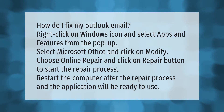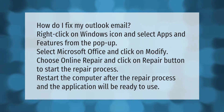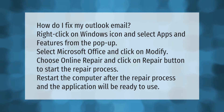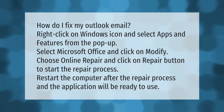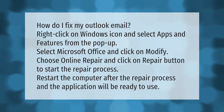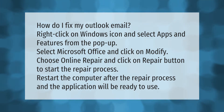To fix your Outlook email, select Microsoft Office and click on Modify. Choose Online Repair and click on the Repair button to start the repair process. Restart the computer after the repair process and the application will be ready to use.